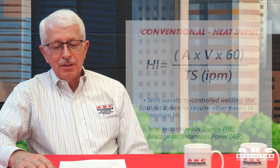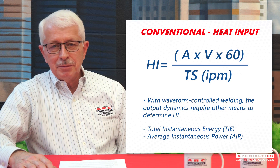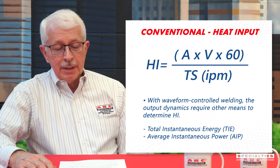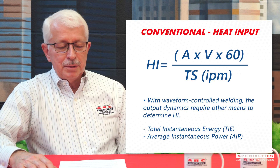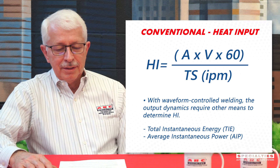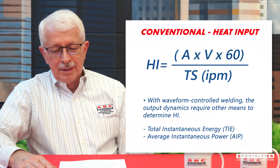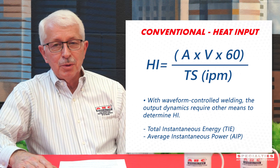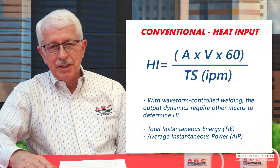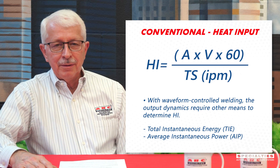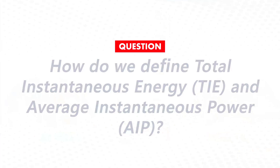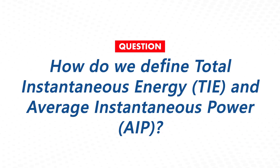We're all familiar with the old conventional formula for heat input: amps times volts times 60 divided by inches per minute. But with waveform-controlled welding, the output dynamics require another means for determining heat input — something we call total instantaneous energy, or TIE, and average instantaneous power, or AIP. So Dick, help us define what TIE and AIP really mean.